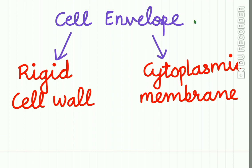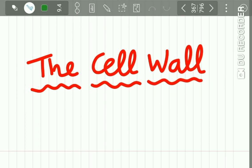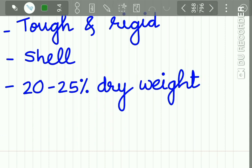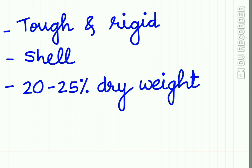The cell envelope is made up of two components: a rigid cell wall and a cytoplasmic membrane. In this lecture let us study the cell wall in detail. The cell wall is a tough and rigid structure surrounding the bacterium like a shell. It weighs 20 to 25 percent of the dry weight of the cell.